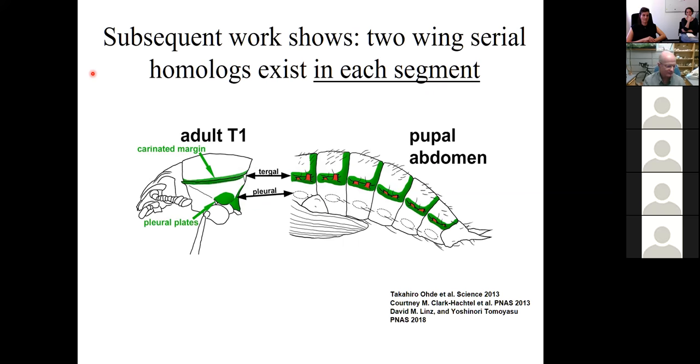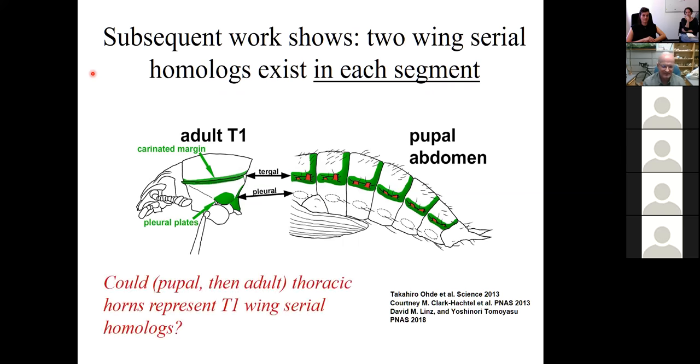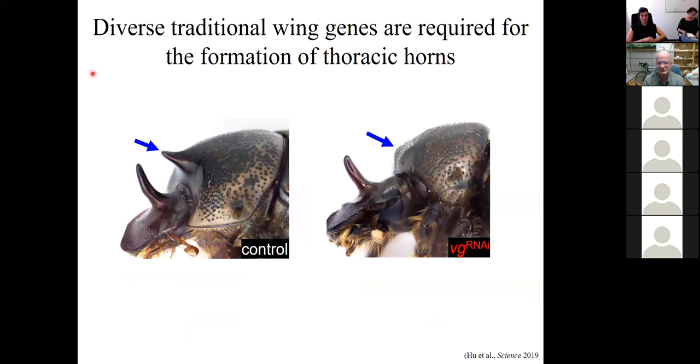I'm telling you all this because it motivated the hypothesis that maybe thoracic horns could also represent T1 wing serial homologs. How are you going to test that? The first thing we did is we knocked down some of the best characterized wing regulatory genes, such as vestigial, and when we do that, this is a control injected individual, here's a normal thoracic horn, and here is a thoracic horn that has gone poof. We did that with vestigial, apterous, same result, horn disappears, disheveled, thoracic horn disappears, abrupt, a major regulator of wing development, has the same effect.